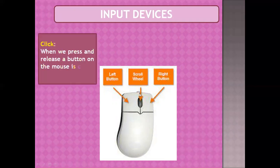What can we do with the mouse? The first thing is click. Whenever we press and release a button on the mouse, it is called a click. Usually, click refers to pressing and releasing the left mouse button. When we press and release the right mouse button, it is called right click. But pressing and releasing the left mouse button is simply called click.